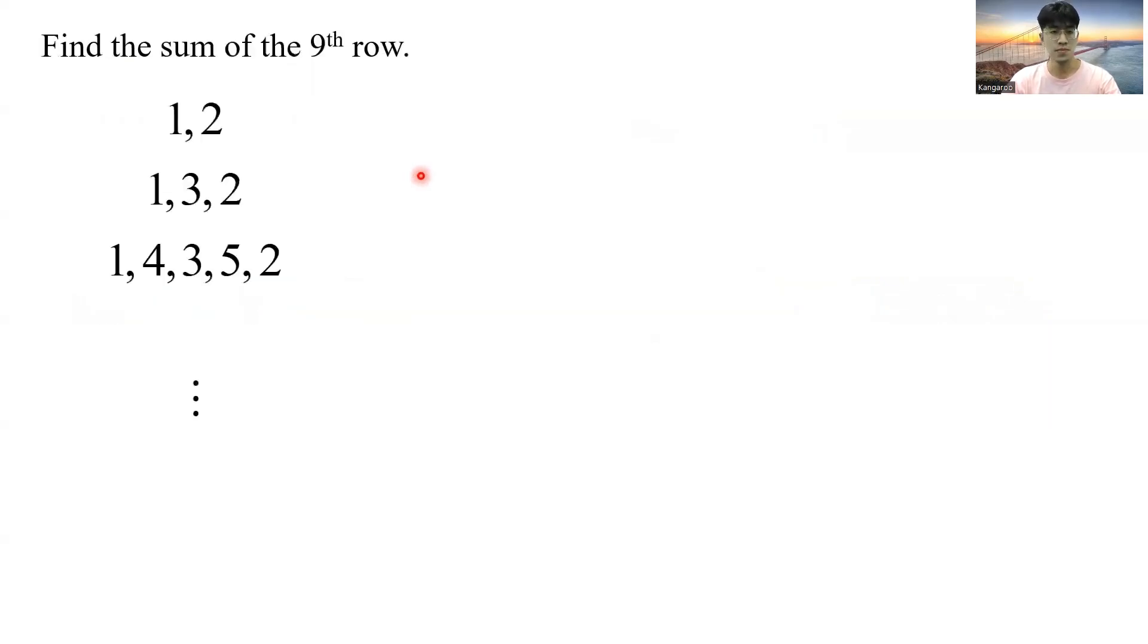Now let us move on to the next problem. Find the sum of the ninth row. Let's see. For the first row, I have 1, 2. For the next row, I have 1, 3, 2. And for the third row, I have 1, 4, 3, 5, 2. So what is the pattern here?